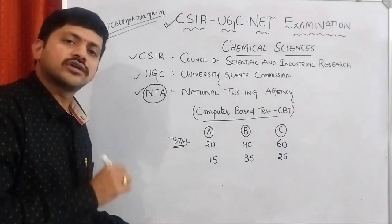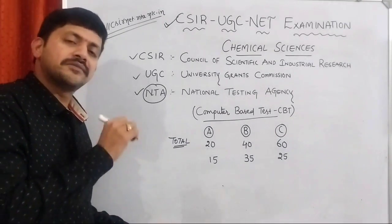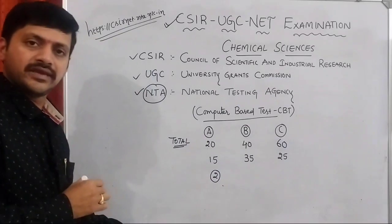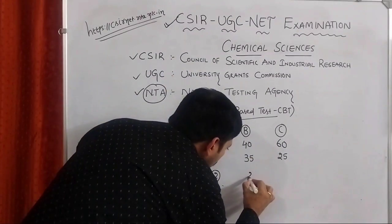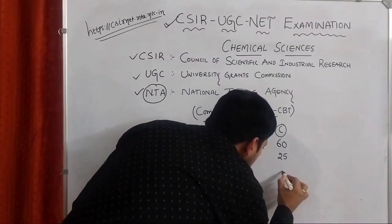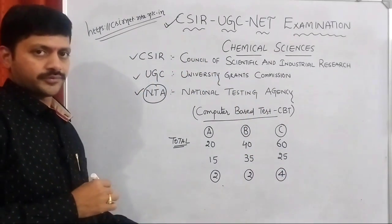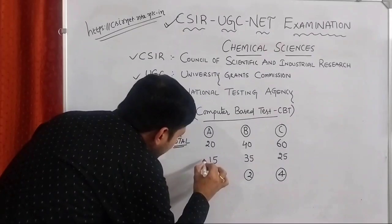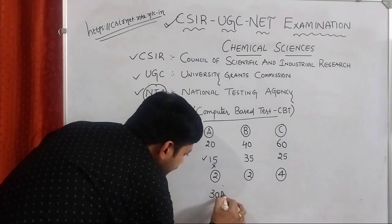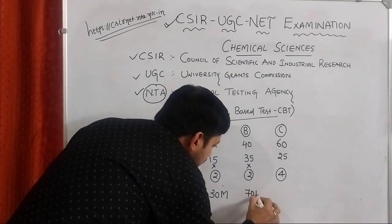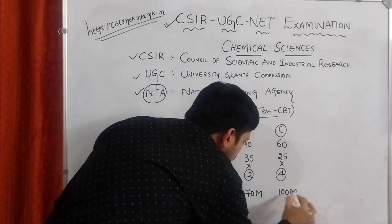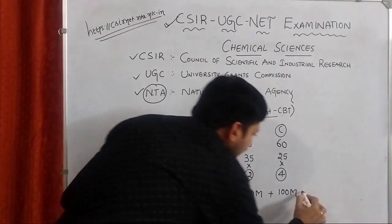Let us see the marks allotted to each question in Part A, Part B, and Part C. In Part A, each question carries 2 marks. In Part B also, the marks per question is 2. But in Part C, the marks allotted is 4. So the aspirant attempting 15 questions in Part A gets 30 marks, 35 questions in Part B gets 70 marks, and 25 questions in Part C gets 100 marks.